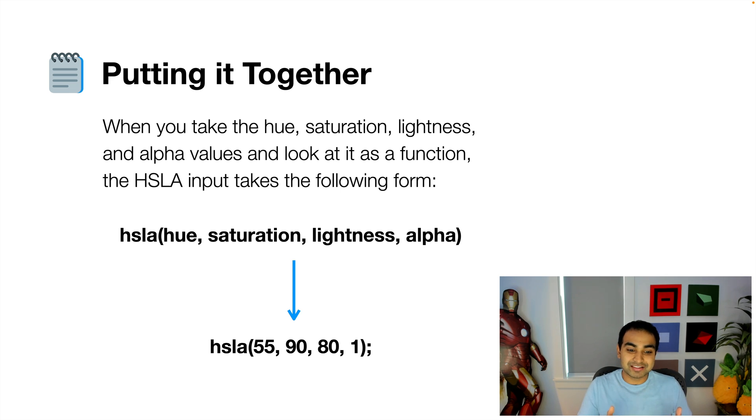90 is, in terms of this case, the saturation, how intense the color is. Lightness is the light. And 1 is alpha.